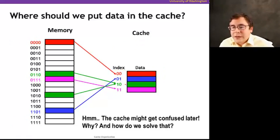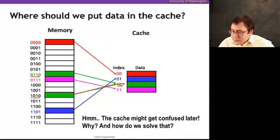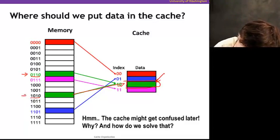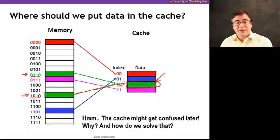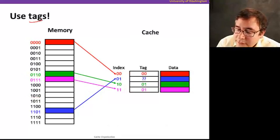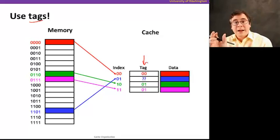Now, once we put the data there, suppose that two different addresses both map to the same cache location based on their lower two bits. The processor needs to know which block of memory is actually stored there — we've lost some information in this mapping. So some more information has to be stored alongside the data in the cache. We're going to use something called tags. Tags are another storage element in the cache — one tag per data location — that tells what address is stored there.